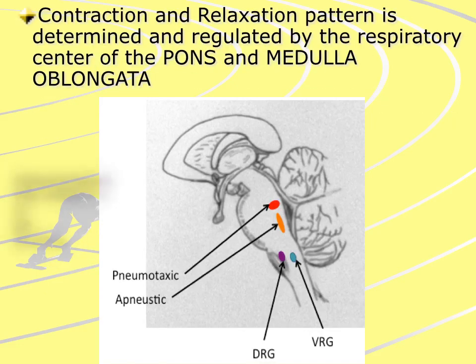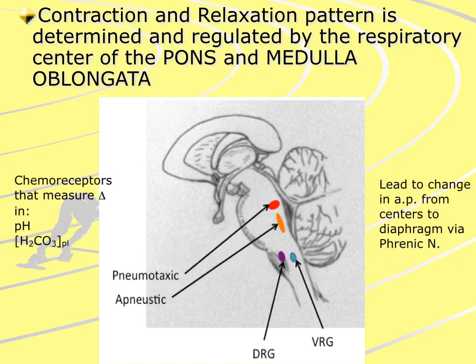The contraction and relaxation pattern of the ventilatory muscles will be regulated by the respiratory centers of the pons and the medulla — in particular, sensors within the pons in the pneumotaxic and aponeustic centers, and nuclei within the medulla in the dorsal respiratory ganglion and ventral respiratory ganglion, which will lead to changes in the action potentials being set by the phrenic nerve to the diaphragm and the other respiratory muscles.